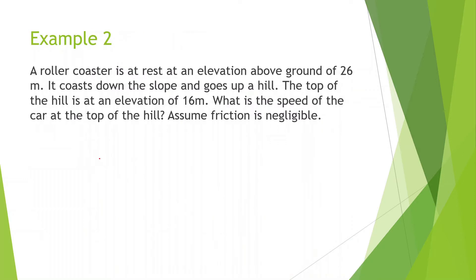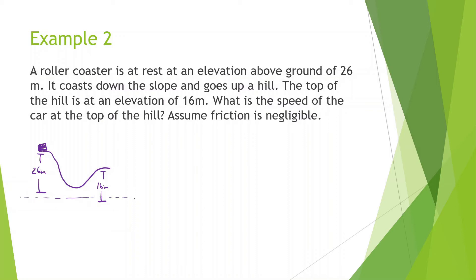Let's look at example number two. A roller coaster rests at an elevation of 26 meters above ground. It coasts down the slope and goes up a hill. The top of the hill is at an elevation of 16 meters. Find the speed of the car at the top of the hill — assume friction is negligible. It starts at 26 meters and ends at 16 meters. The first thing we're going to do is draw the zero line — I like to always put the zero line at the lowest point.